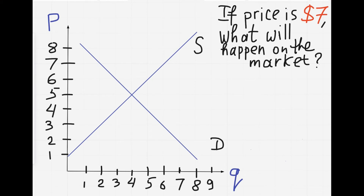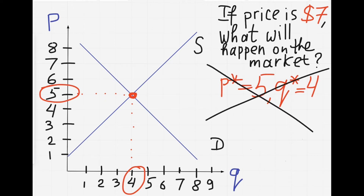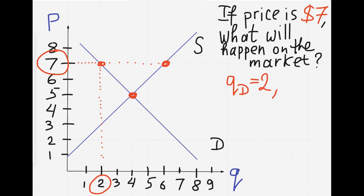Look at this problem. If the price is fixed at $7, what will happen on the market? Notice that supply meets demand at the equilibrium, at which the equilibrium price is $5 and equilibrium quantity is 4 units. But the price is fixed at $7, and at $7 supply will not meet the demand — the equilibrium is not going to happen. At the price of $7, the quantity demanded equals 2, but the quantity supplied equals 6. So sellers want to sell more than buyers want to buy — there is too much being produced.